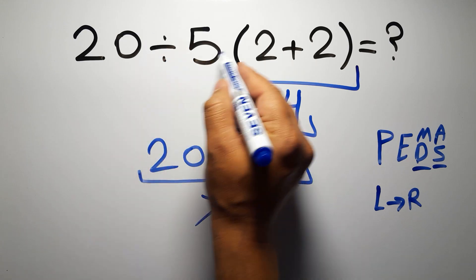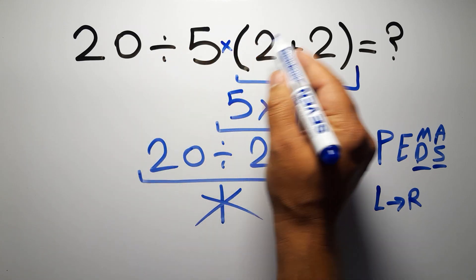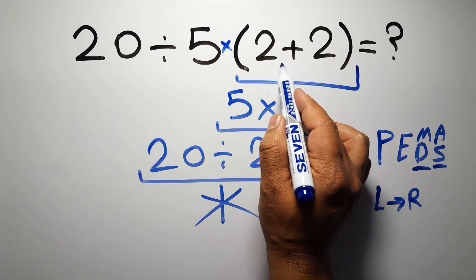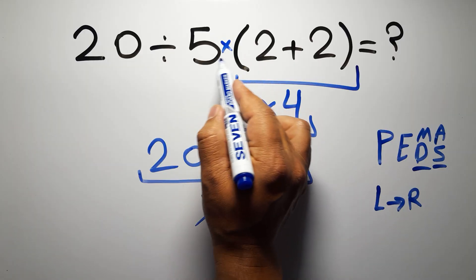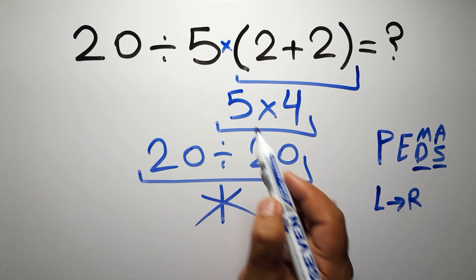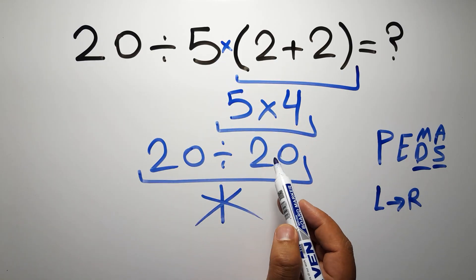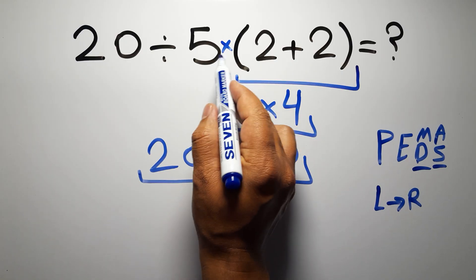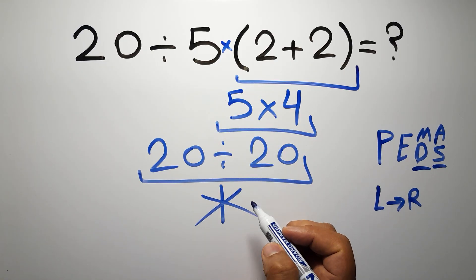In this expression, we have one division, one multiplication, and one parenthesis. Inside this parenthesis, we have one addition. Here we have a multiplication, because in mathematics, when a number is placed next to parentheses, it means multiplication, and we usually don't write the multiplication sign for brevity.